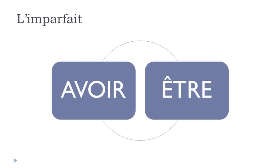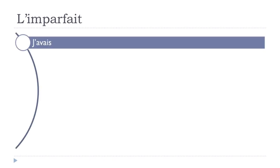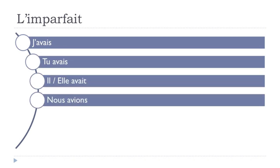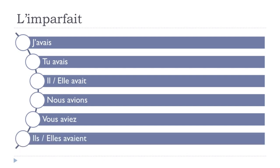Avoir and être can be tricky, so let's look at them. For 'avoir': j'avais, tu avais, il avait, elle avait, nous avions, vous aviez, ils avaient, elles avaient. It's quite easy — especially orally, since avais, avait, and avaient all sound the same. Make the liaison in 'nous avions' and 'vous aviez'. Remember final -s and -t are not pronounced.